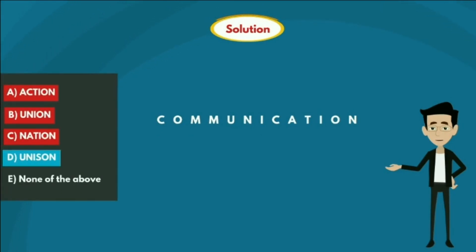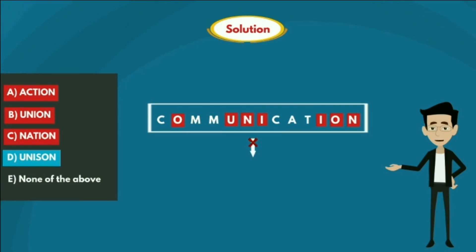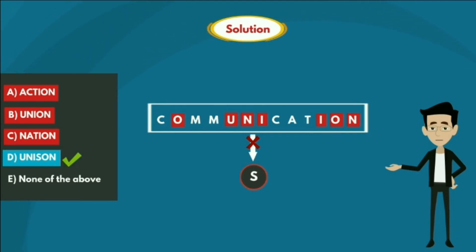Option D: UNISON. If we observe the given option, the letters U, N, I, O, N are in the given word COMMUNICATION, but the letter S is not. So UNISON is the word which cannot be formed using the letters of COMMUNICATION. Therefore option D is true.